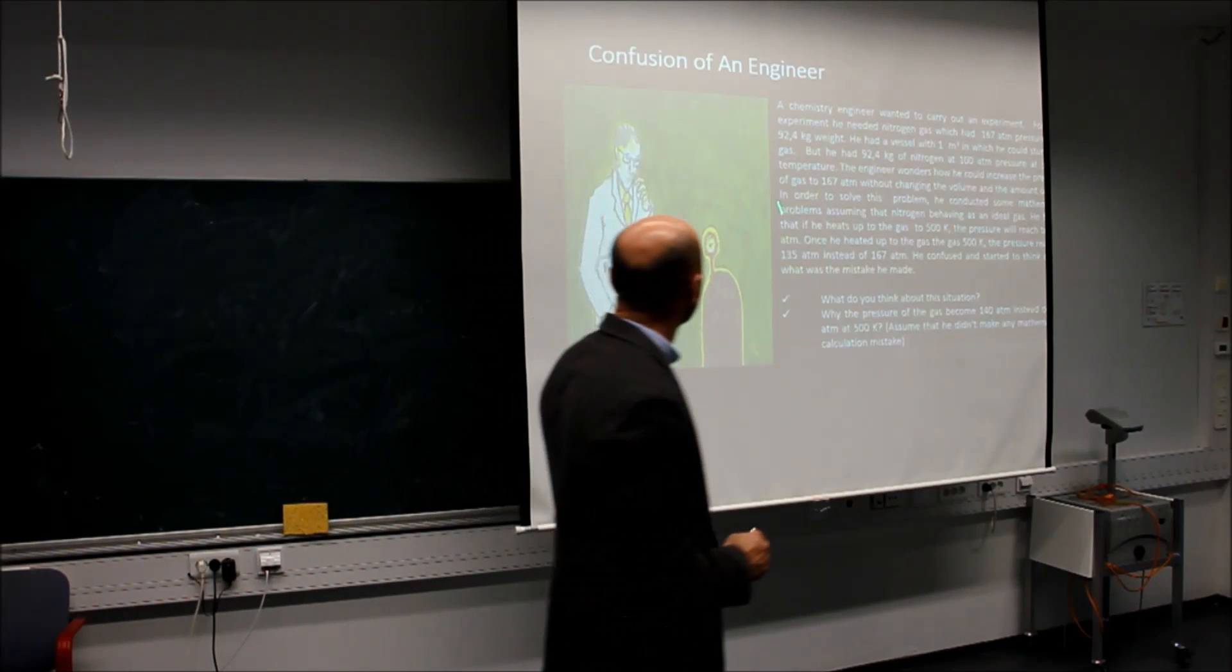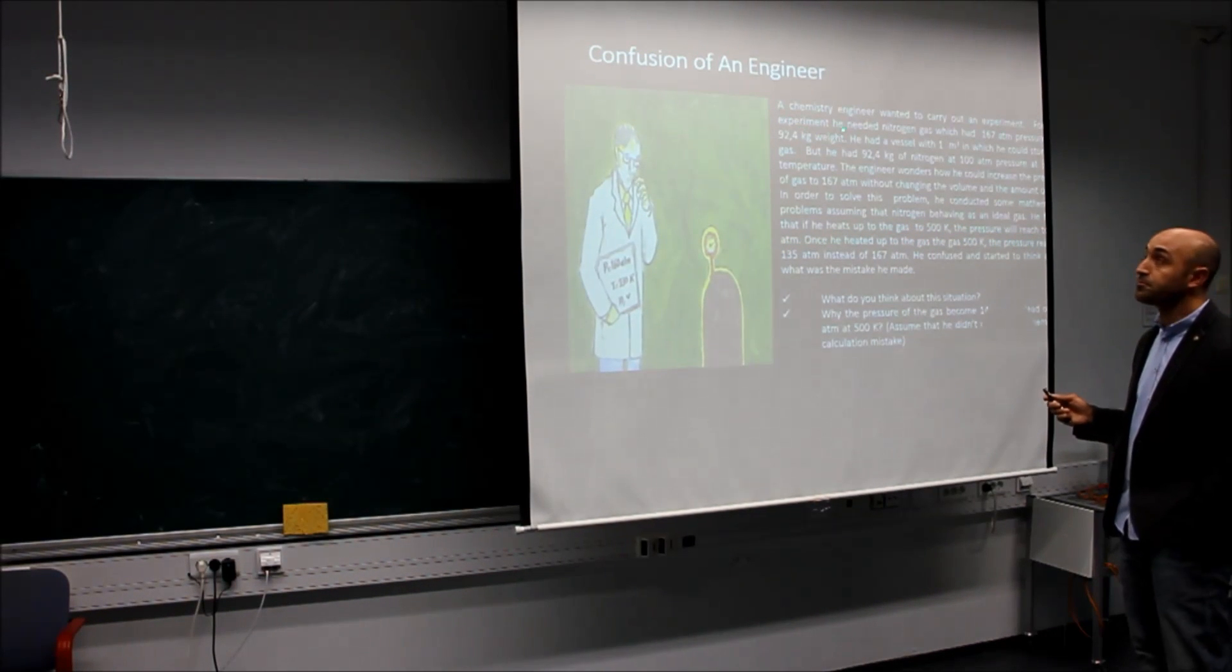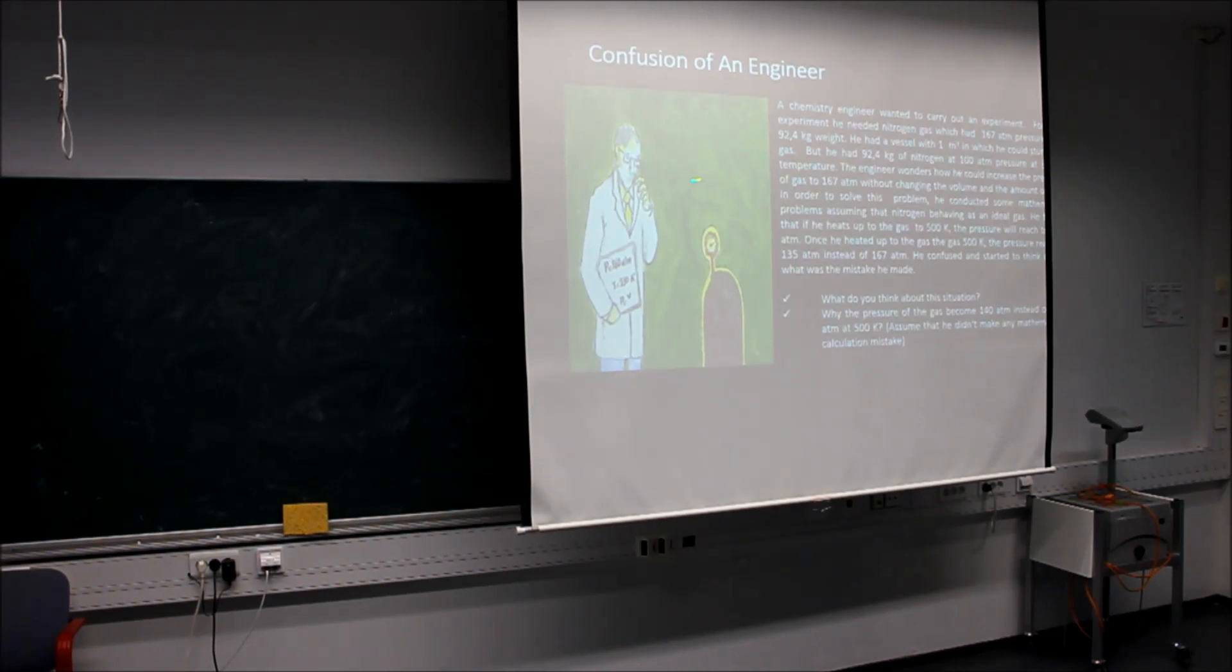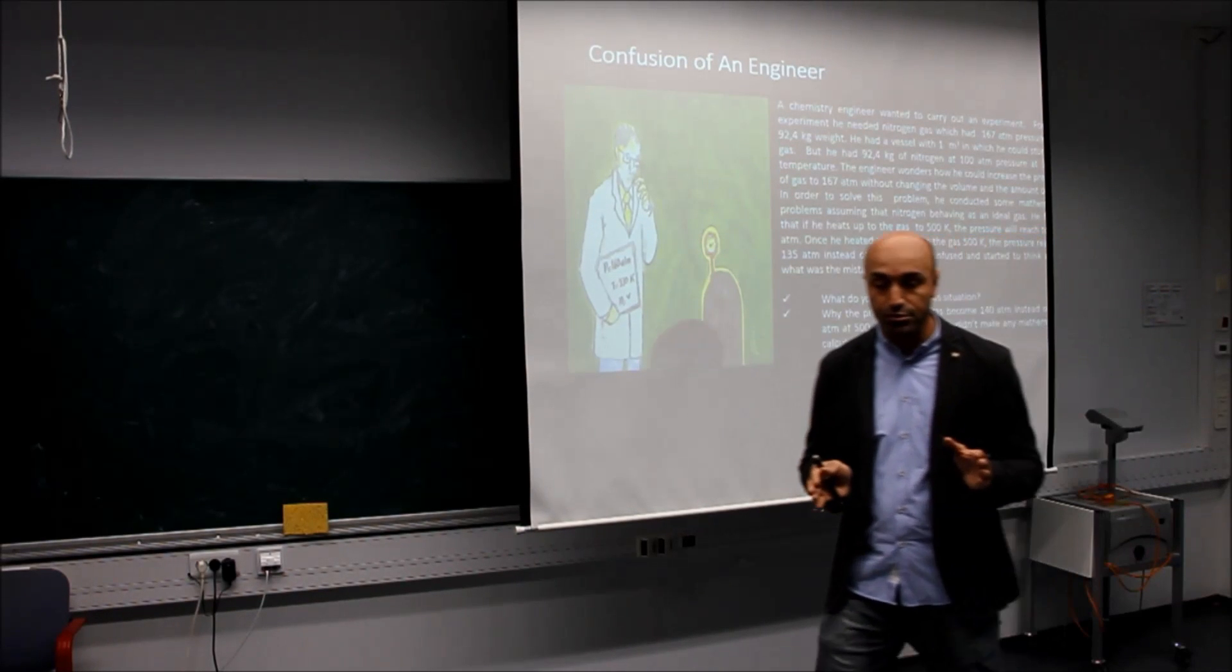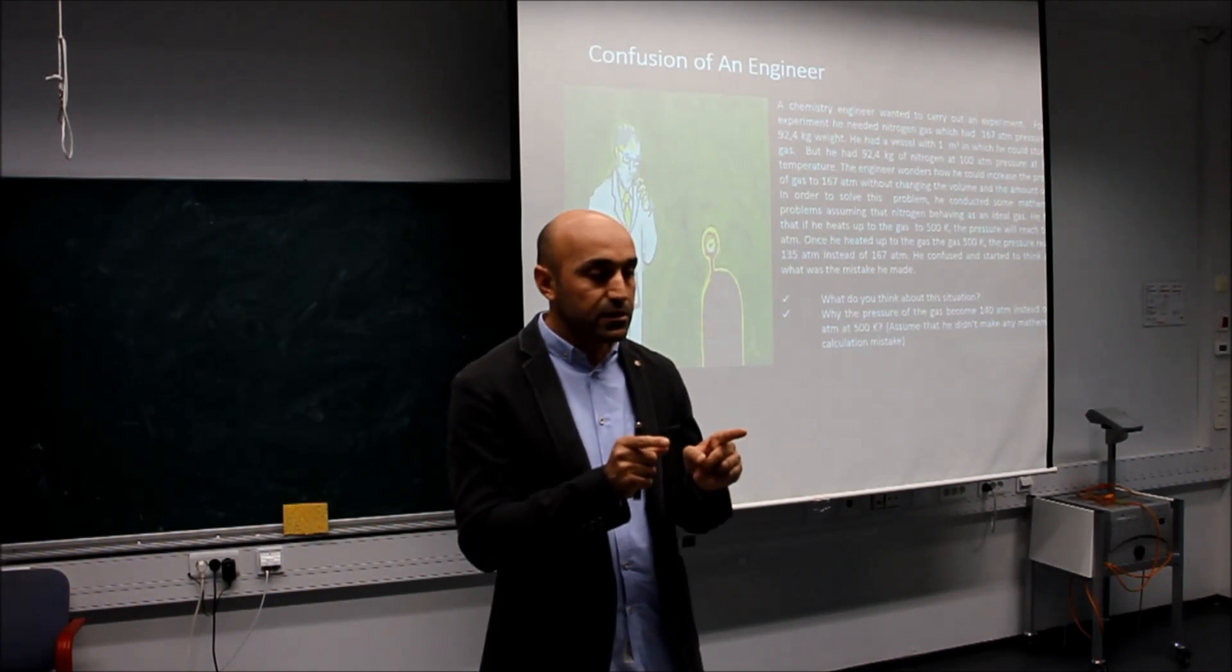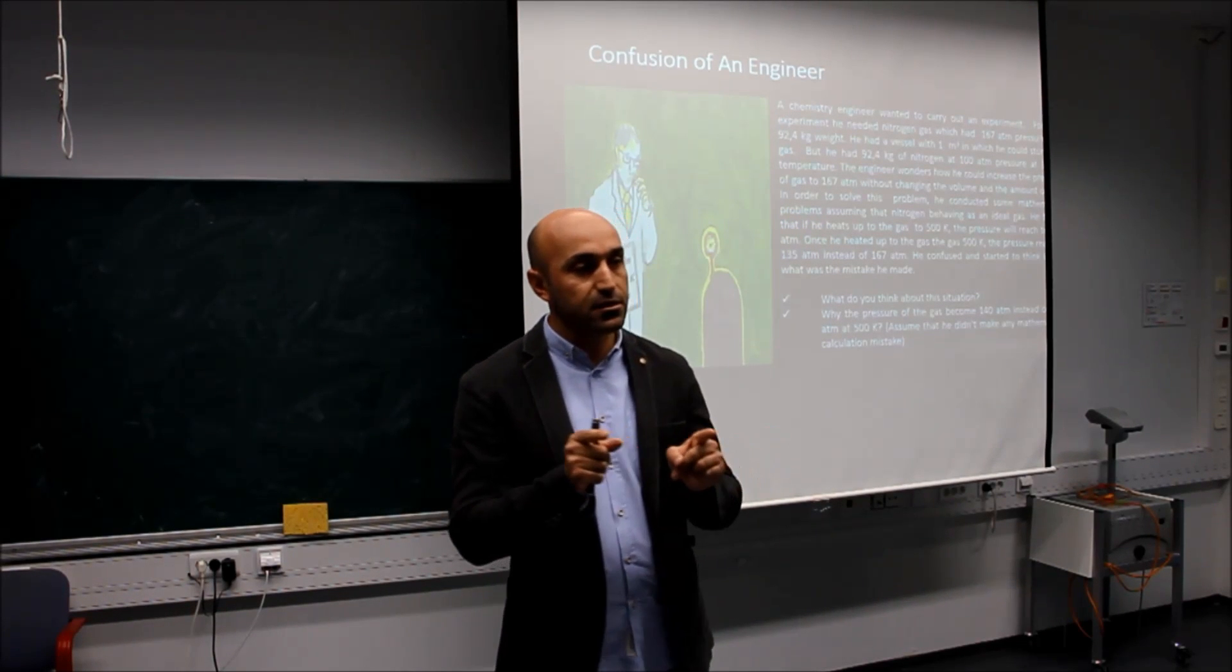It's named Confusion of an Engineer. This problem is about a chemistry engineer who decided to do an experiment. He has nitrogen gas and tried to raise its temperature and pressure, and then he made a mistake. This problem aims to teach students the differences between general gas laws and ideal gas laws.